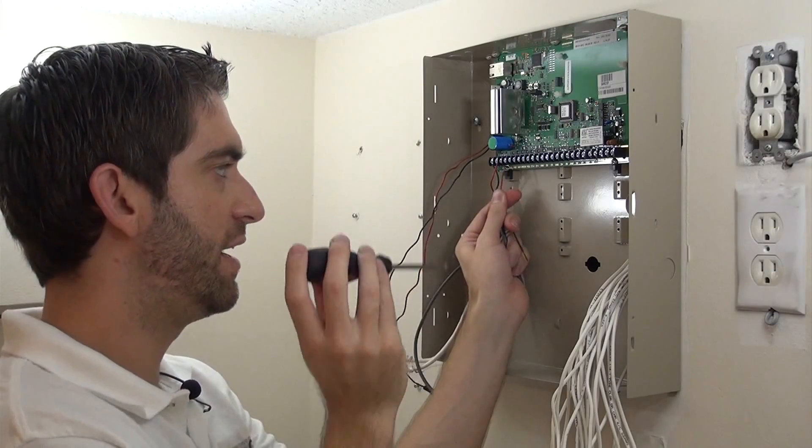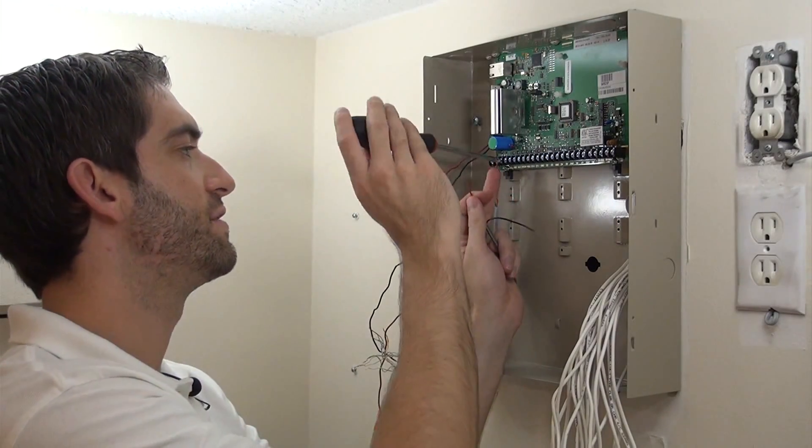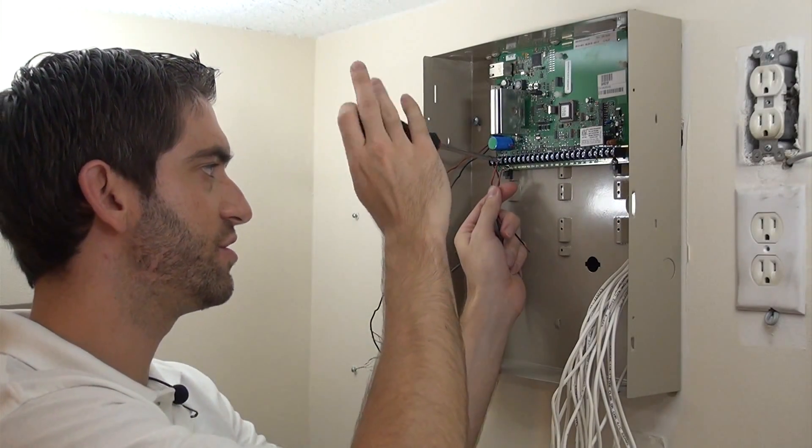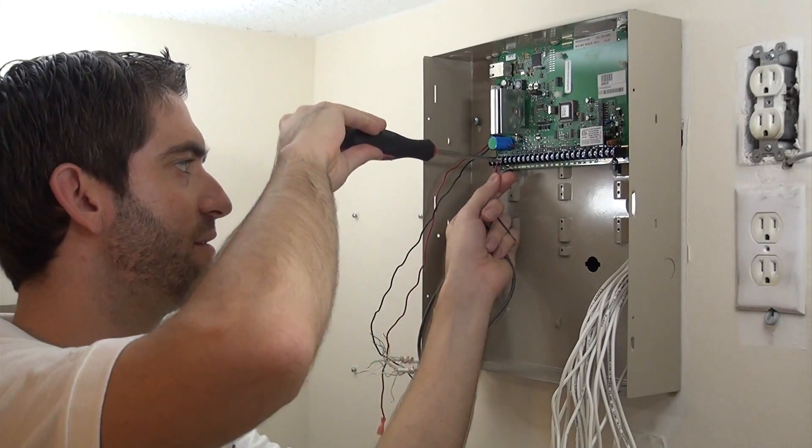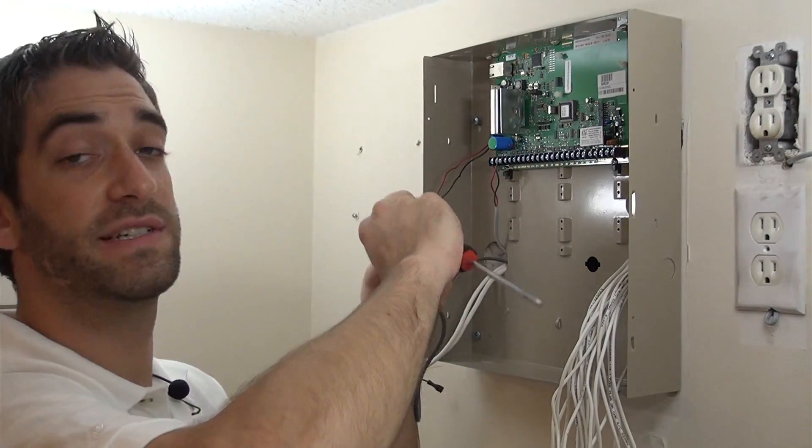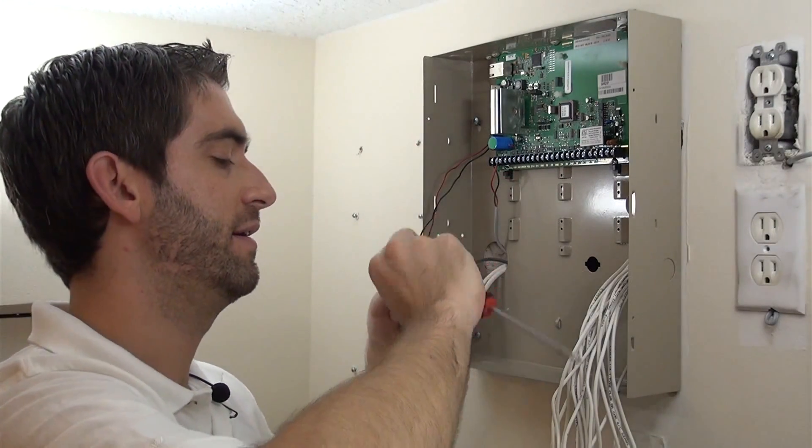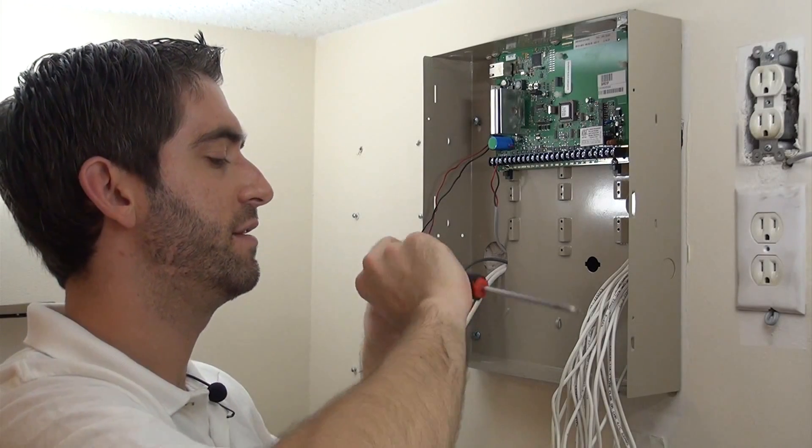When the alarm kicks on or goes into alarm mode, it gives voltage to this terminal which drives the power out to the siren so that they can make the noise. Hopefully, scare away the intruder. Let everyone know that there's been a break in.